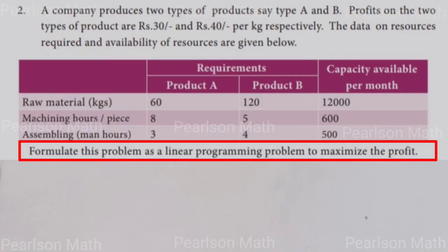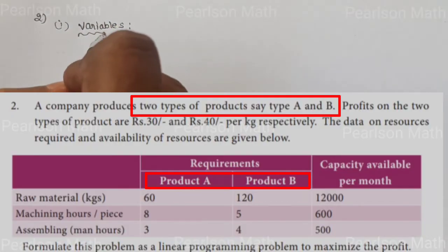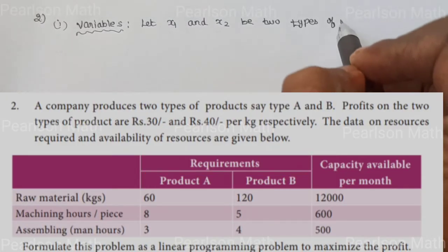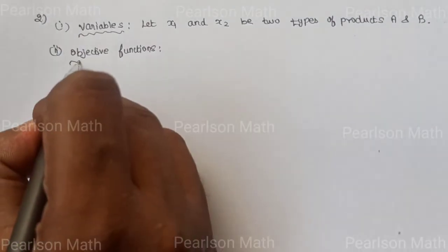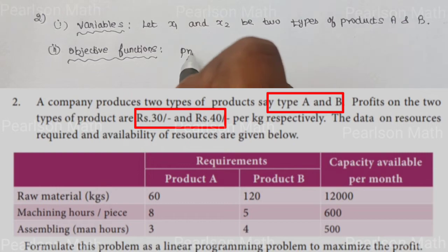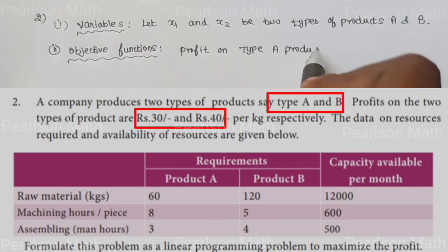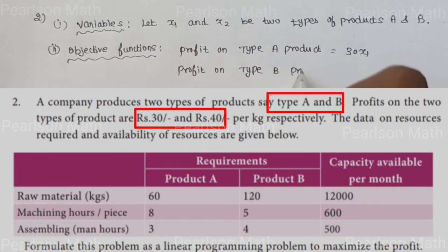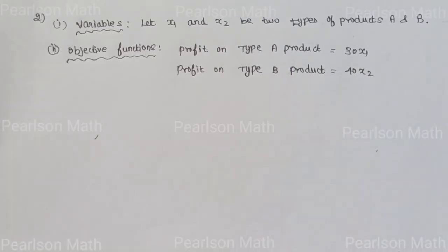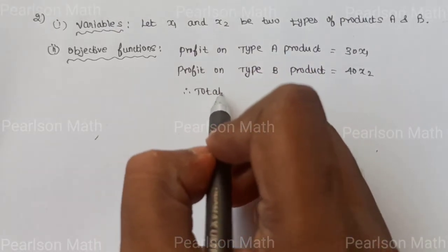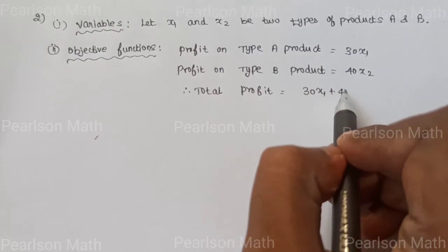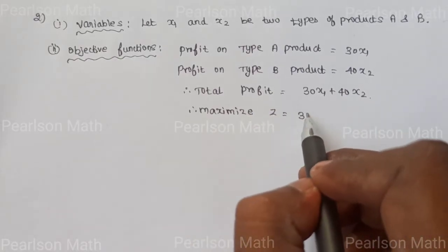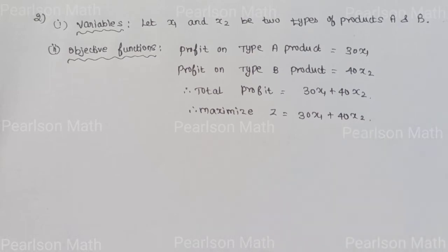We formulate this as a linear programming problem. Let X1 and X2 be the quantities of products A and B. The objective function: profit on type A product is 30X1 and profit on type B product is 40X2. Total profit equals 30X1 plus 40X2. Since profit is to be maximized, the objective function is: Maximize Z equal to 30X1 plus 40X2.